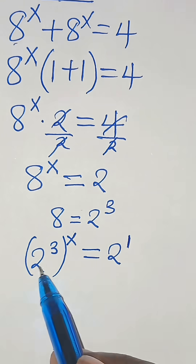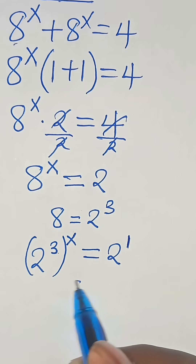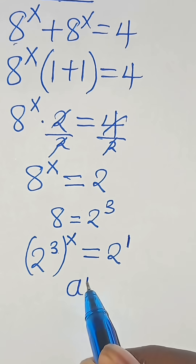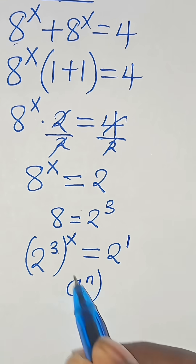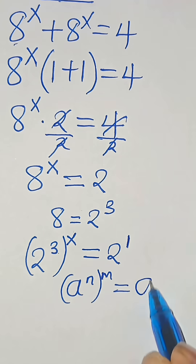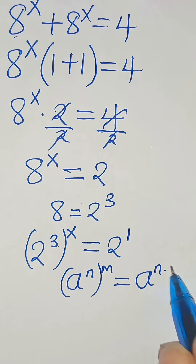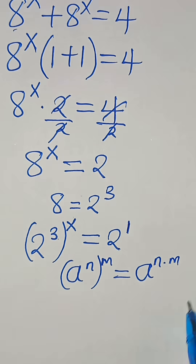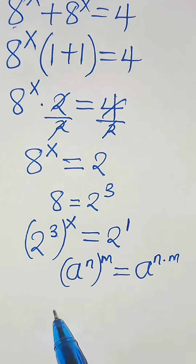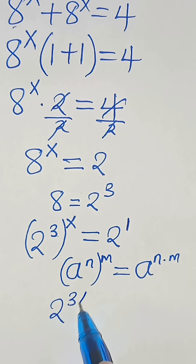We have that 2 to the power of 3 to the power of x, this is in the form of a to the power of n raised to the power of m, which can be expressed as a to the power of n multiplied by m. So we have 2 to the power of 3 times x, which is 3x.